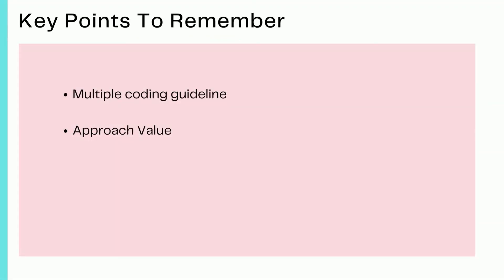The key points to remember: an important ICD-10-PCS guideline is that sometimes multiple codes are needed to capture all components of a procedure. Approach values play an important role — always select the approach based on where and how the procedure is performed on a body part. If separate codes are required to define all components of the procedure, you must code them separately, just as we saw in this example.